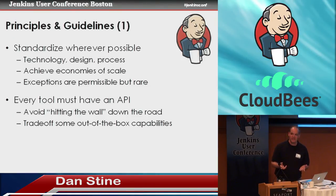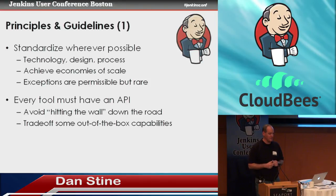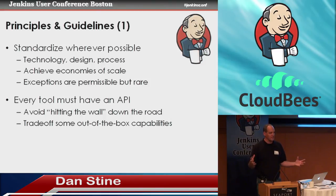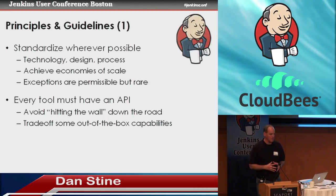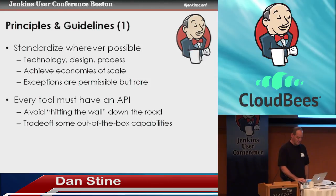One principle we have is that every tool we add to our infrastructure must have an API. We need to be able to glue things together, get information out of one system and pass it to another, execute queries. We may have to trade off some out-of-the-box capabilities for that, but the idea is that we avoid hitting a wall down the road where the information is trapped in a GUI and we'd have to screen-scrape to get at it.